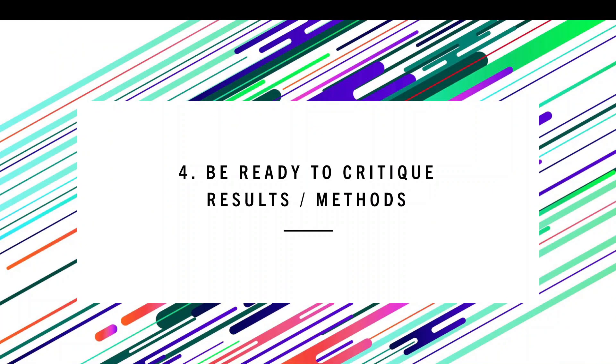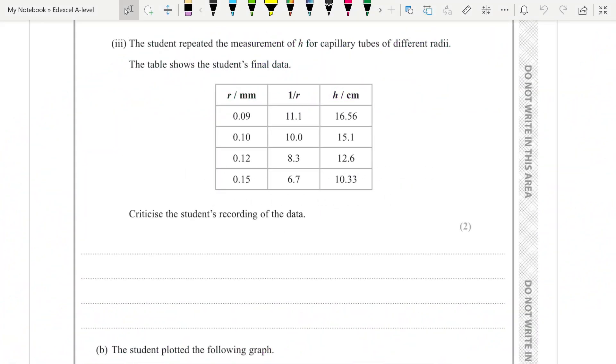Another very common question is critiquing somebody else's results or method. And the first of this kind is to critique the recording of the data in their table. And there are some usual things you can say about this. The first thing you check is whether their raw data is to the same number of decimal places and their processed data is to the same number of significant figures as the raw data it came from. So for example, here all of our radius raw data should be to two decimal places because it was made with the same instrument and that is true. However, all of our height raw data should also be to two decimal places and that is not. So that's your first critique. The height should all be recorded to the same number of decimal places. Another thing we could say is that they have no unit for their 1 over r. That should be recorded with a unit and this 11.1 should be to one significant figure because the raw piece of data it came from is 1SF.